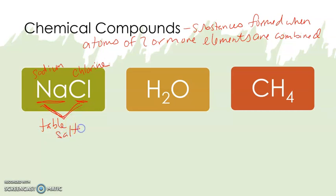NaCl is an example of a chemical compound. H2O is our good friend water — we've got hydrogens and oxygens combined together. Over here we've got carbon with four hydrogens; this is methane, which is a gas. We'll touch upon it when we talk about carbon and the importance of carbon.